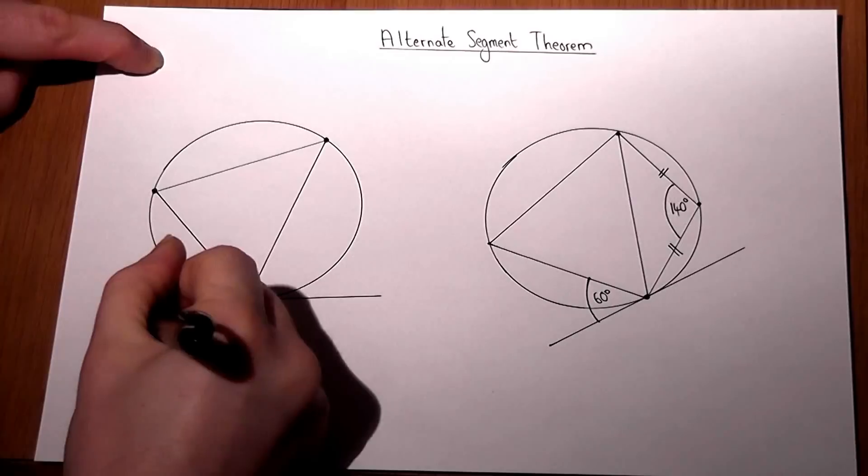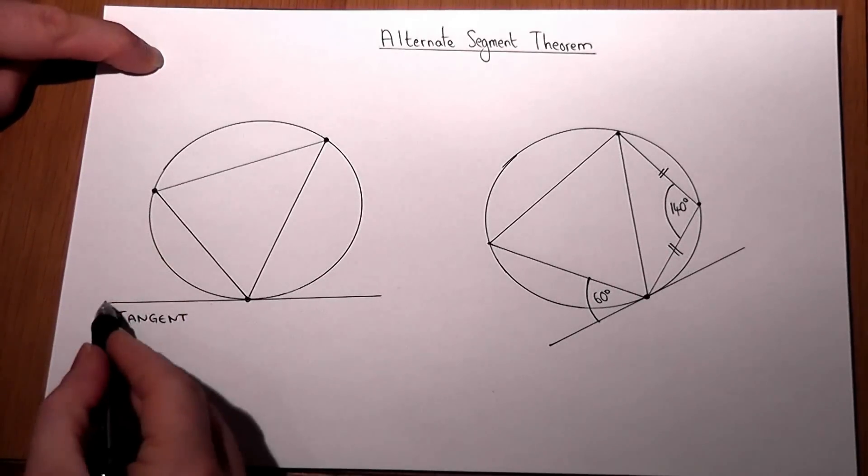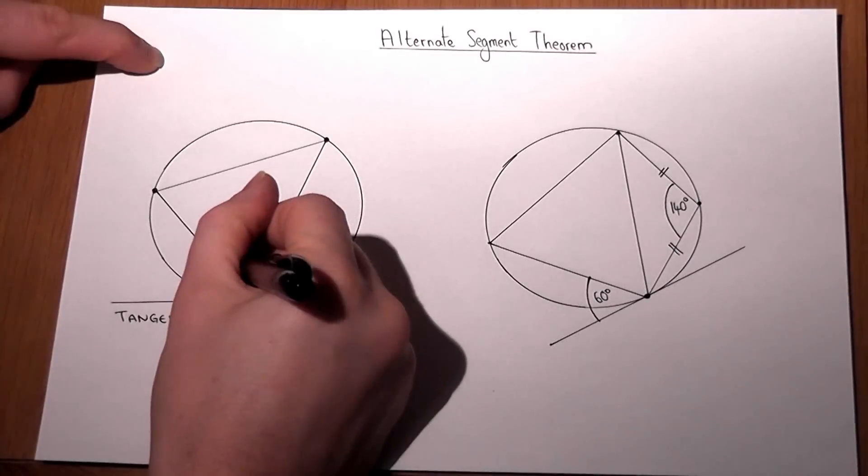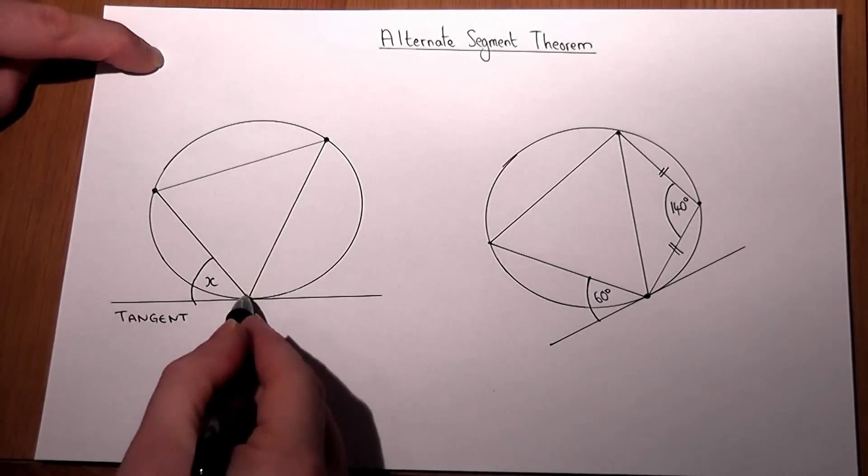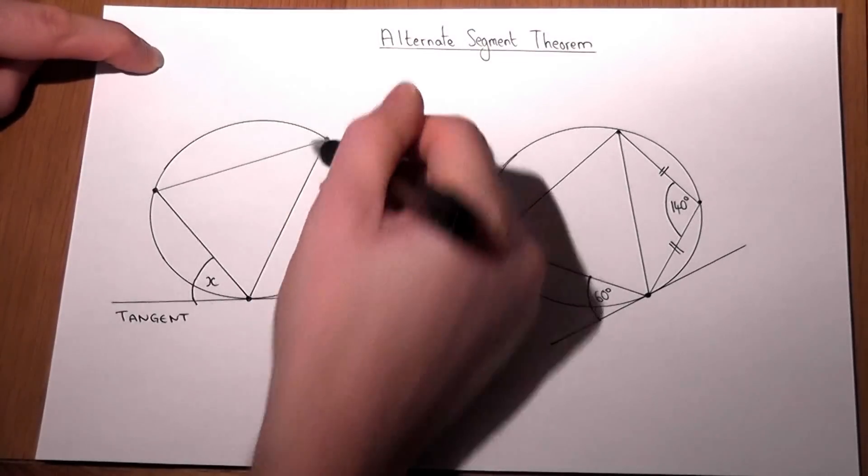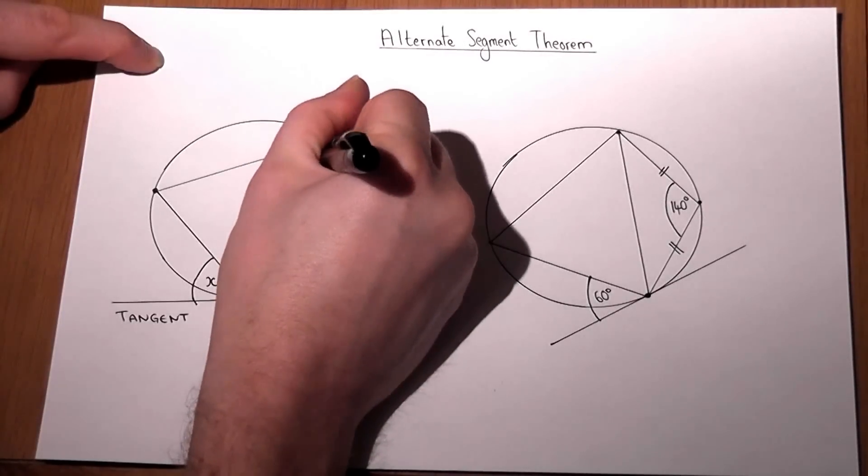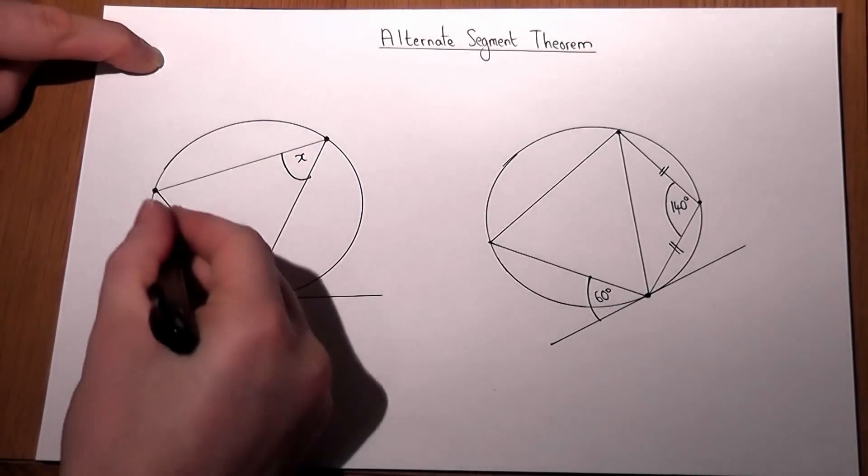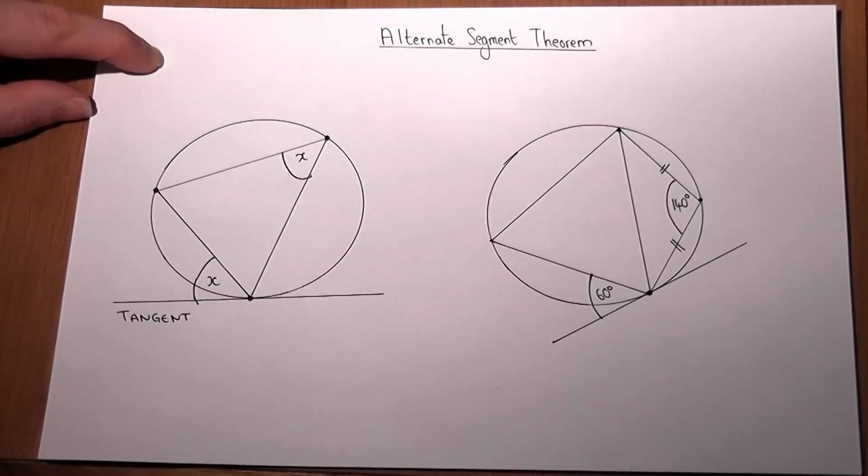If you've got a tangent, which is a line which just touches the circle, and if we know the angle x here from the tangent up to the triangle, then the opposite angle, the one up here, is also x. So it's not quite your z-angles you might know from before, the angle opposite will equal x.